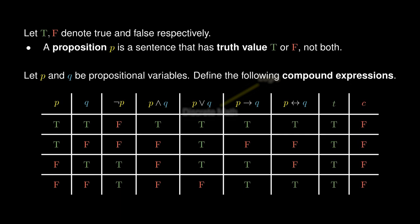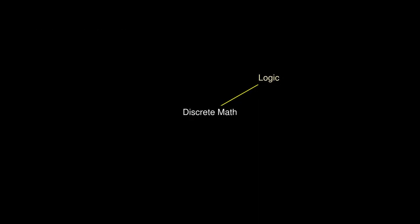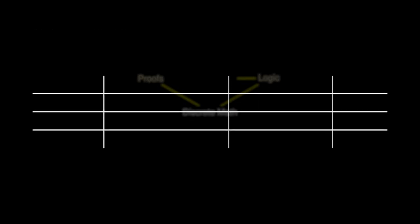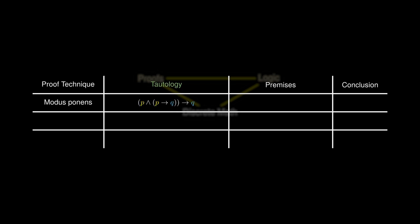In particular, these tautologies form the basis of various crucial proof techniques. Each proof technique assumes several premises from which we can derive a definitely true conclusion. The proof technique modus ponens assumes that P is true and the implication P implies Q is true. If these two premises are satisfied, the conclusion must be that Q is true.